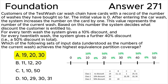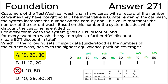Answer C is not correct. 1 covers the no discount partition, while 10 and 50 both cover the 10% discount partition. The 50% discount partition is not covered. So overall, only two of the three valid equivalence partitions are covered.